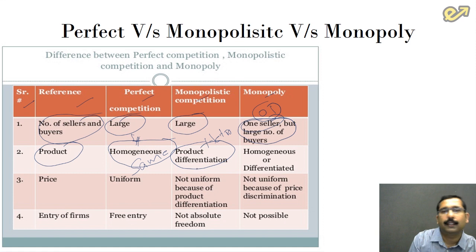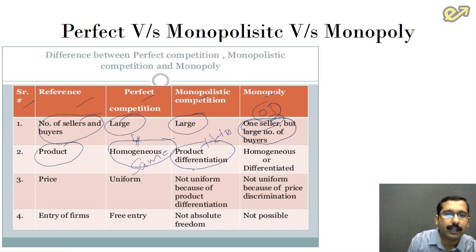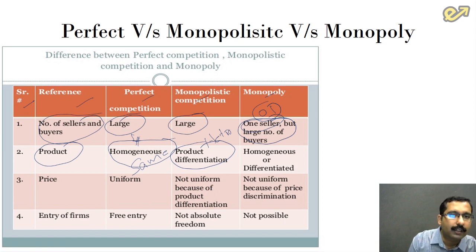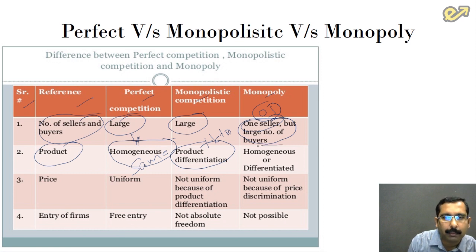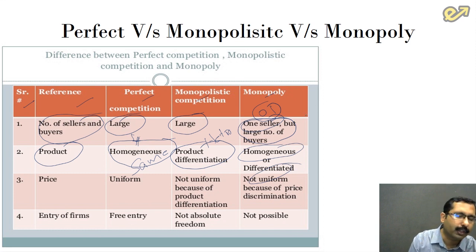Take the example of the detergent market. Surf Excel and Ariel are two premium brands — although they do the same job, they are different in color, texture, and price. That is an example of heterogeneous products. In the monopoly market, goods can be either homogenous or differentiated; it is up to the monopolist to decide what kind of good to produce.